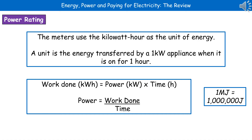When you read those meters, the numbers on there are actually units of energy called the kilowatt hour. A unit is the energy transferred by a one kilowatt appliance when it's on for one hour.